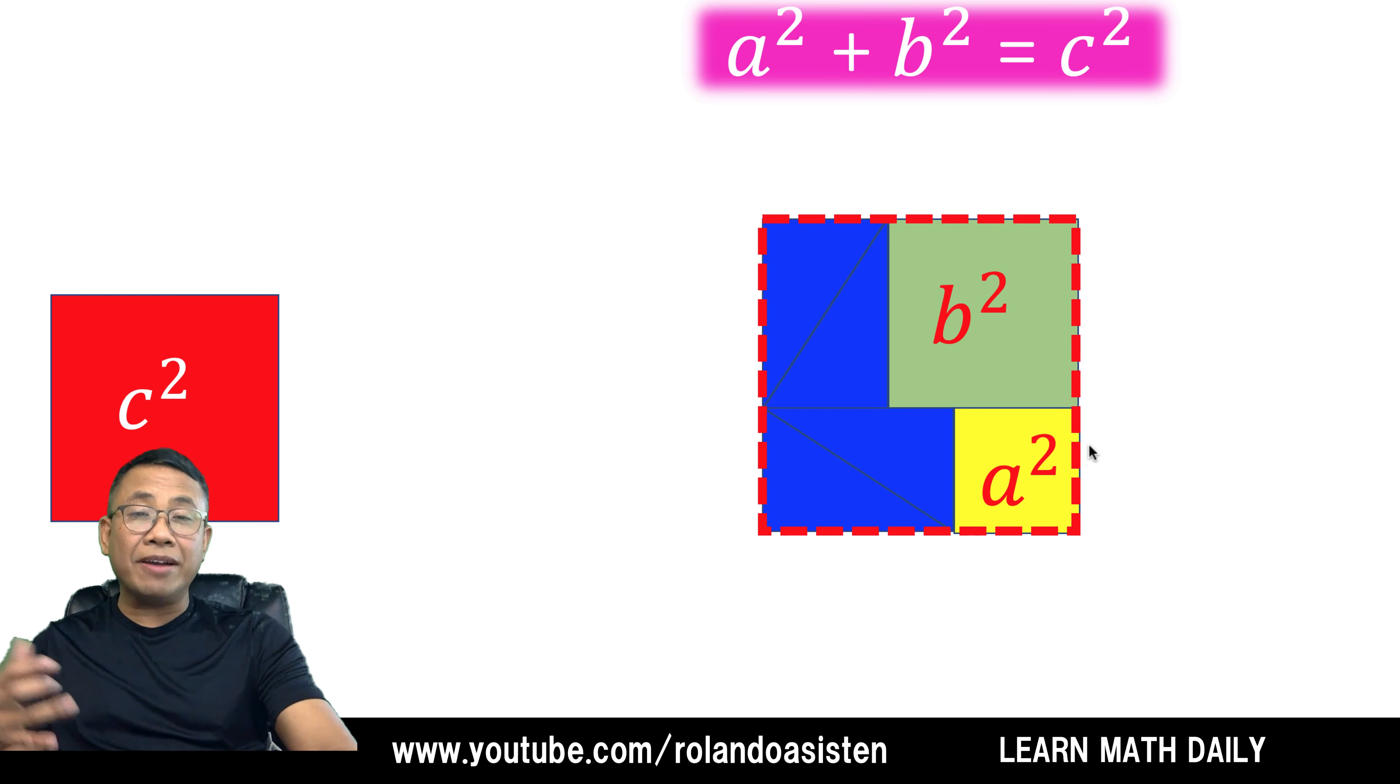Just like that, we now have shown that the area C squared and the combined areas of A squared and B squared are the same because both of them occupy the same space in this bigger square.